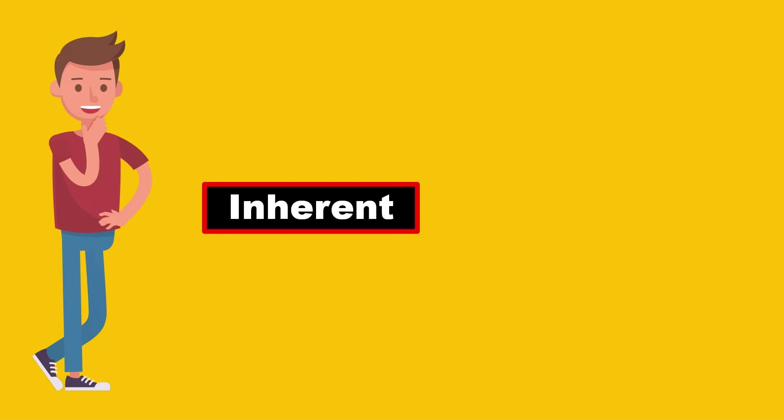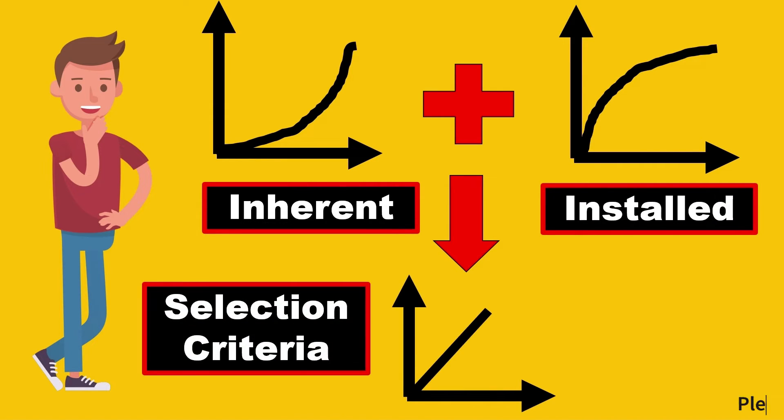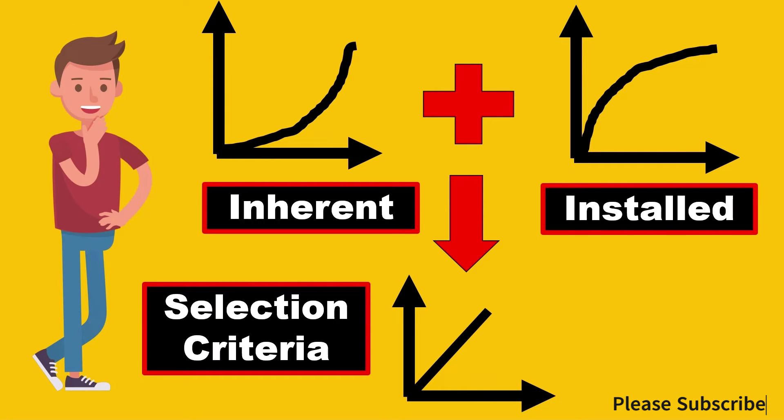You can't change what happens inside the plant, but you can modify the inherent characteristics of the valve. If you modify the inherent characteristics so that when it's finally installed in the plant, the combined output is a linear curve, this is where the engineering criteria of selecting the right characteristics comes in.